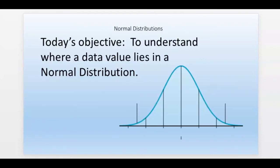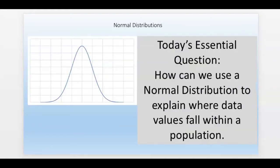Today's objective, to understand again where a data value lies in a normal distribution. The essential question, it's written on the board and you're going to need to know this again for the homework assessment. How can we use a normal distribution to explain where data values fall within a population?